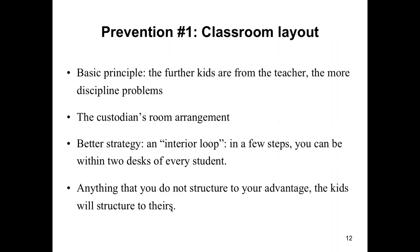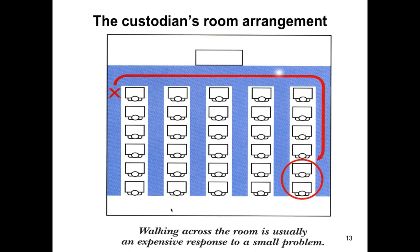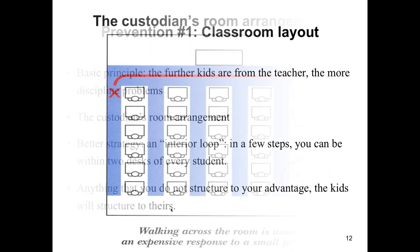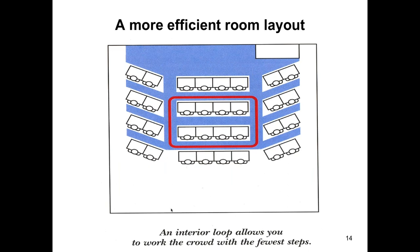Classically, the custodian is the person who dictates the arrangement of the classroom. The custodian's arrangement is not very advantageous — if you're helping a student in one corner, the two students furthest away from you are misbehaving, and then you have a long commute to get to them. The recommendation is to have what he calls an interior loop that the teacher can take to establish proximity with as many students as possible — basically every student in the classroom. The assumption is that the closer you are to students, the less likely they are to misbehave; the further away, the more likely.